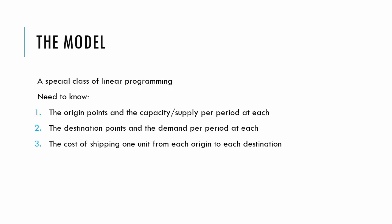In order to do this, we need to know three things. One, the origin points and the capacity or supply per period at each. Two, the destination points and the demand per period at each. And three, the cost of shipping one unit from each origin to each destination.